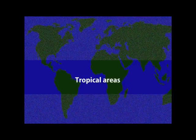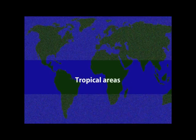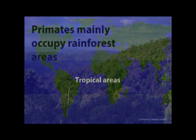This slide shows clearly the tropical areas of the world, including tropical Africa, India, Southeast Asia, and South America. The rest of the world has been fuzzed out.